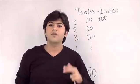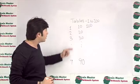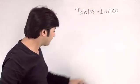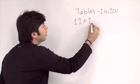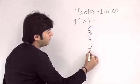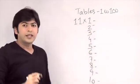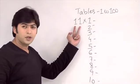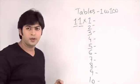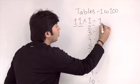Now let's start learning the remaining tables from 11 to 99. We'll begin with the table of 11. Since 11 is a two-digit number, we take its digits individually — this is 1 and this is 1. What we will do is multiply both digits individually with the multiplier. So for the table of 11, we multiply 1 and 1 each separately.